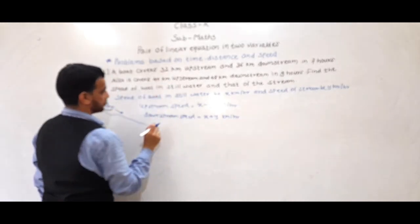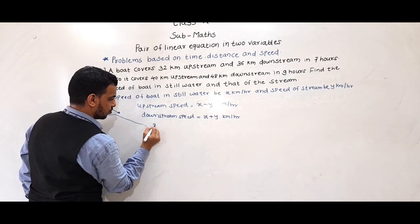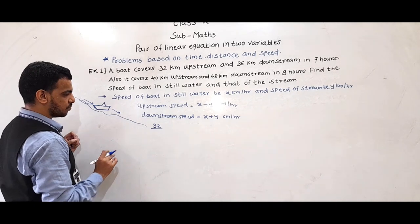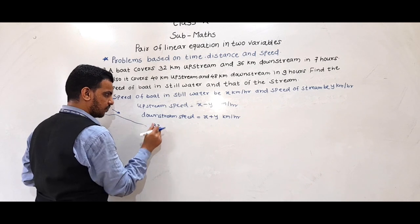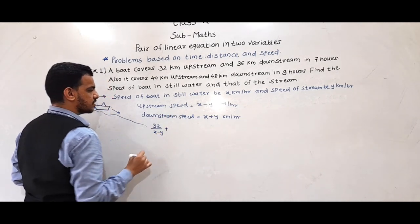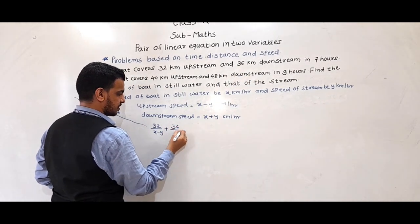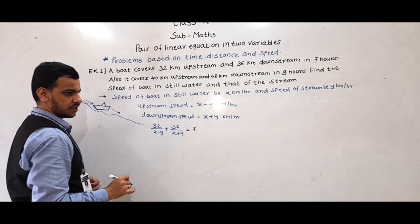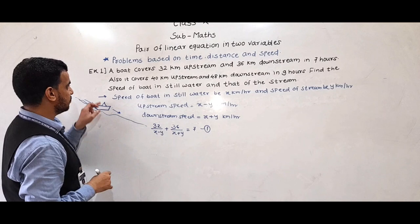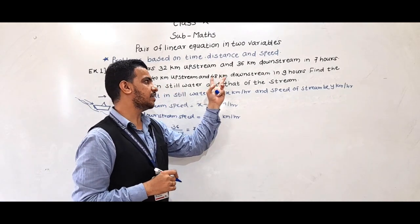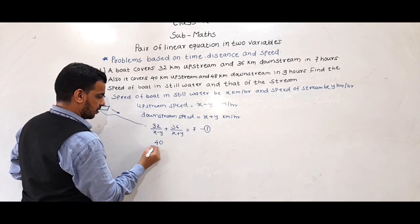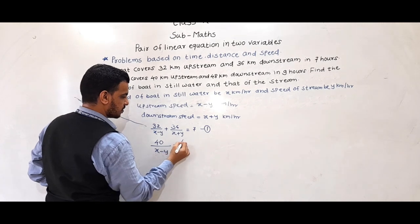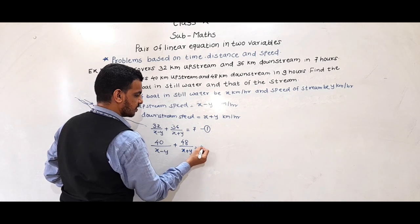Using the first condition — the boat covers 32 km upstream and 36 km downstream in 7 hours — and since time equals distance divided by speed, we get: 32 divided by (x minus y) plus 36 divided by (x plus y) equals 7. And from the second condition, 40 divided by (x minus y) plus 48 divided by (x plus y) equals 9.